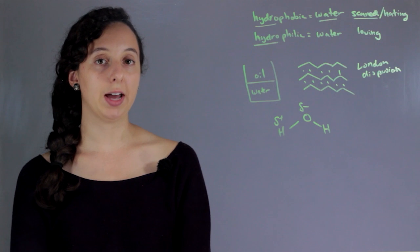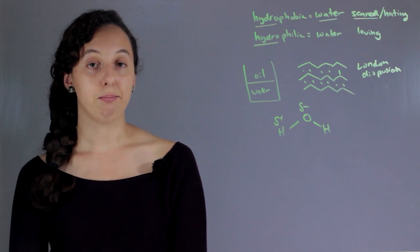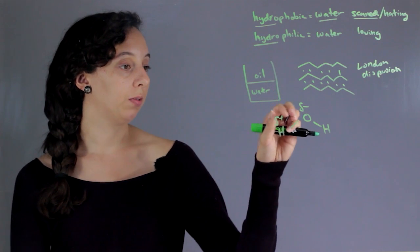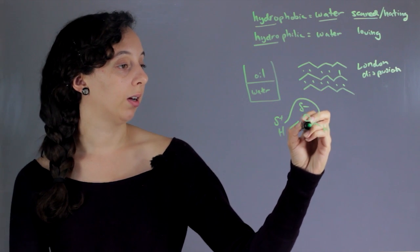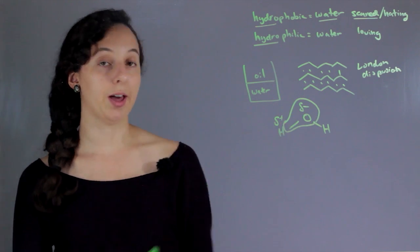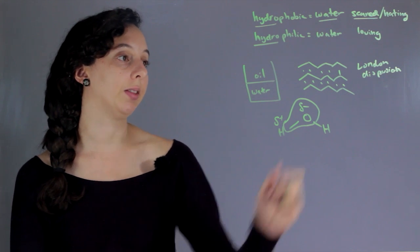What this means is that if you had an electron density map on top of this molecule, all of the electron cloud, almost all of it, would be all around the oxygen. And this little hydrogen would have almost nothing.